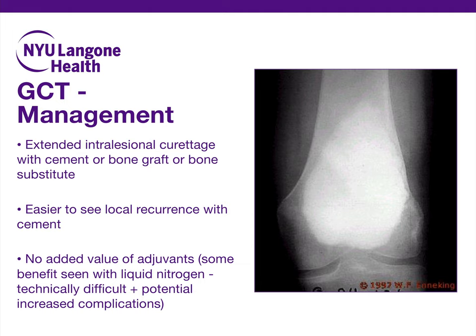Wide excision could also be an option as a one-and-done surgery, particularly in patients who have extension into the articular surface with significant bone destruction such that intralesional curettage is impractical or impossible. This is frequently performed with aggressive recurrences around the distal radius, whereby the tumor is resected through wide resection and reconstruction — which could be performed by different means, including using a vascularized proximal fibula.